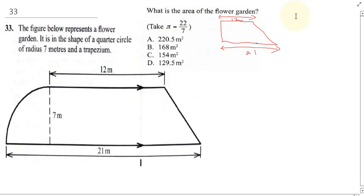Now for the trapezium this area is going to be half times sum of parallel sides times height. So this is going to be half times 12 plus 21 multiplied by the height which is 7.